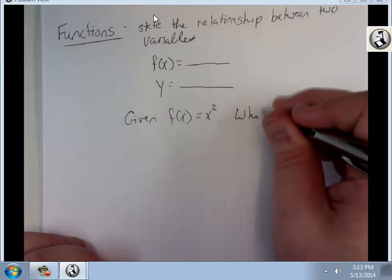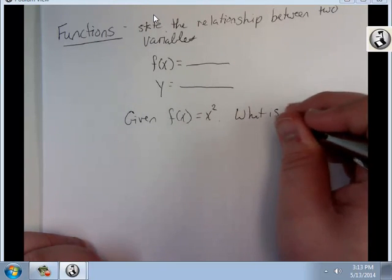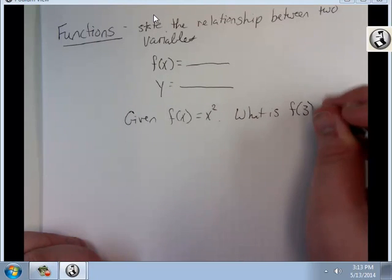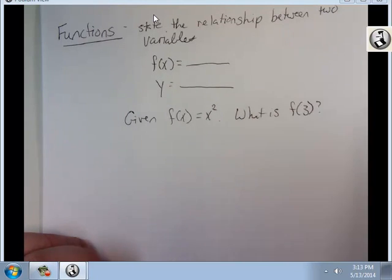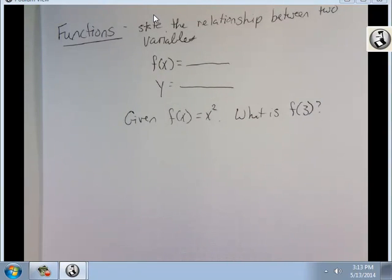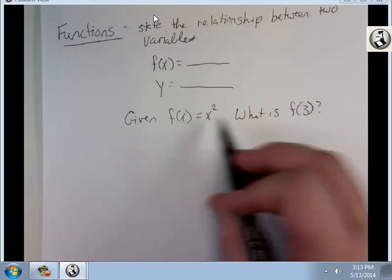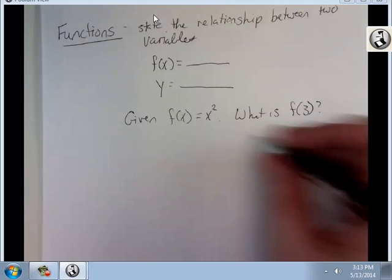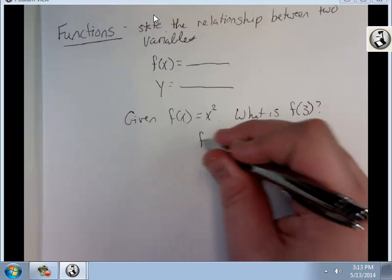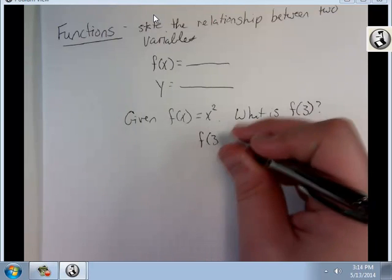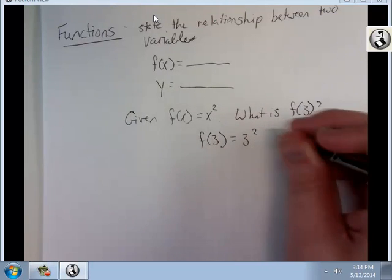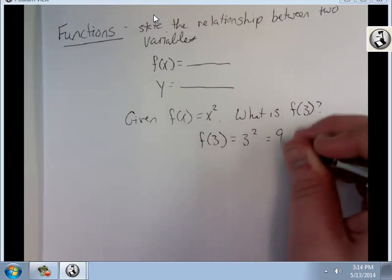What is f of 3? What you're going to do is substitute 3 everywhere that there's an x. So f of 3 would equal 3 squared, which is 9.